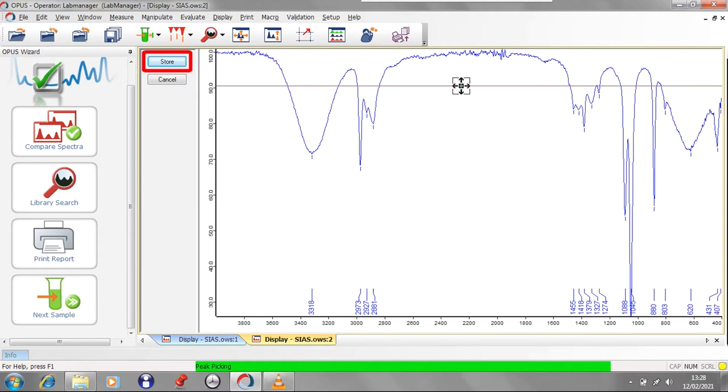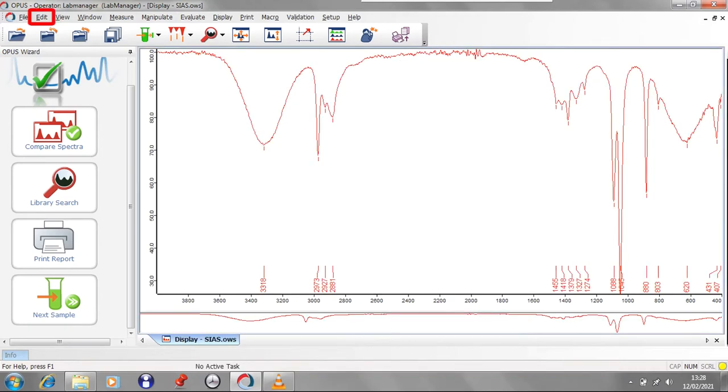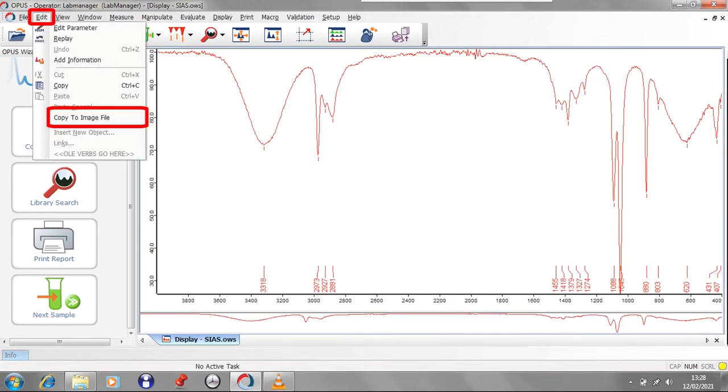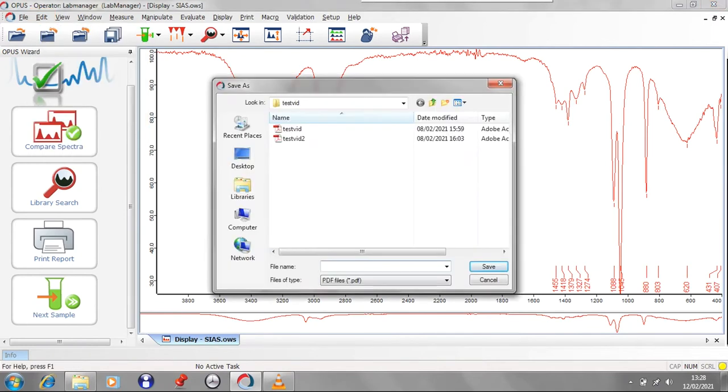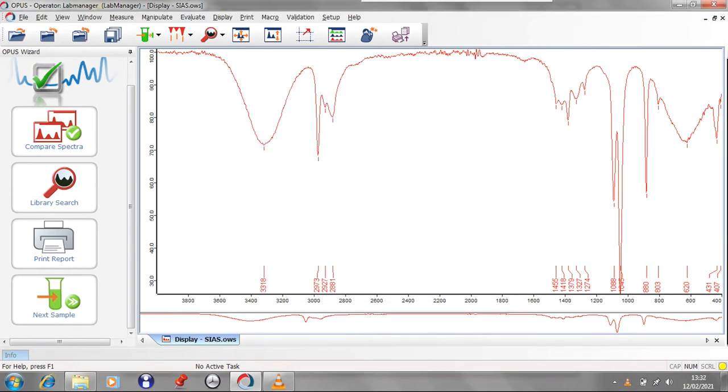When doing interactive peak picking, in order to keep the chosen peaks, press Store, which takes you back to your spectrum with the peaks you have chosen. You can save the spectrum as shown here to a PDF file for later analysis. These files can be transferred to a USB stick if you wish to view them later.